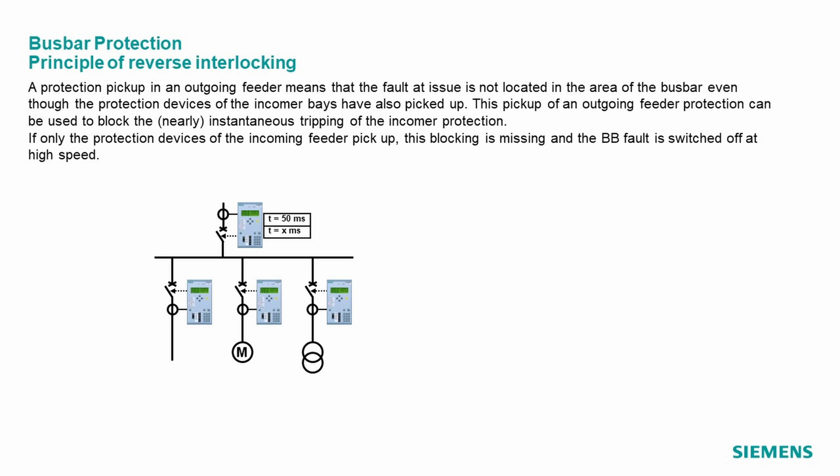The simplest busbar protection can be built according to the principle of reverse interlocking. The advantage of this principle is that the application can be implemented with the same protection devices that also protect the lines and cable routes. This means that no additional equipment is required.